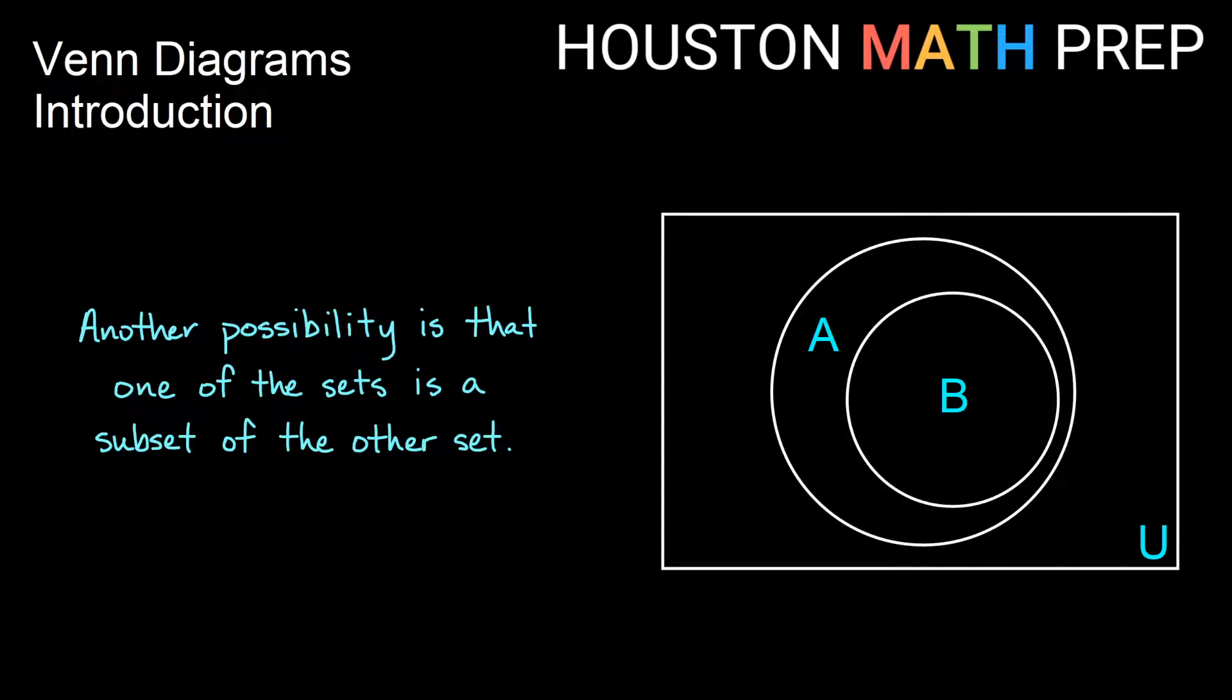We could also have the possibility where one set, everything in that set, is in another set. So we might say here that B is actually a subset of A. Everything contained in B is also in A.